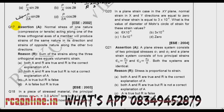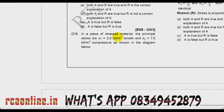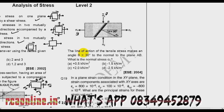Question number 17: I will take this question in my next chapter on elastic constants — it is a misprint in this chapter and is actually a question on elastic constants. Now question number 18: In a piece of stressed material, the principal stresses are sigma_1 (tensile) = 3 and sigma_2 (compressive) = −7, as shown in the diagram. The line of action of the tensile stress makes an angle theta = 30° to the normal plane AB. What is the normal stress sigma_N?